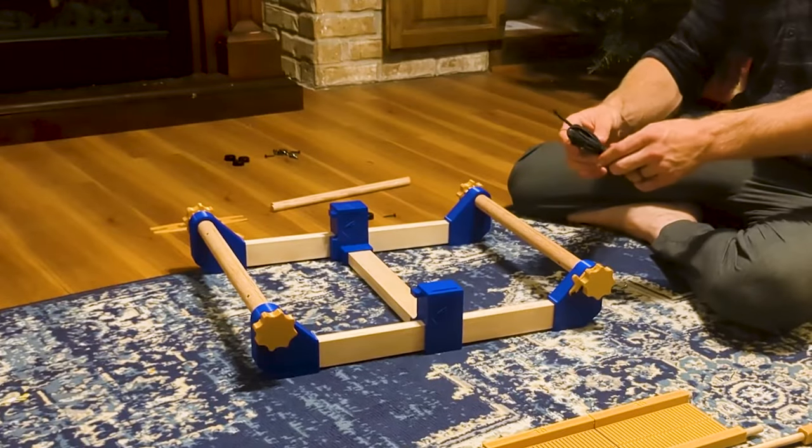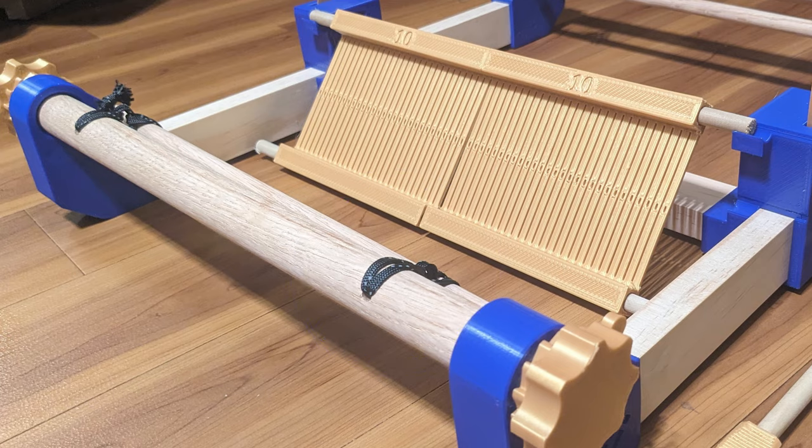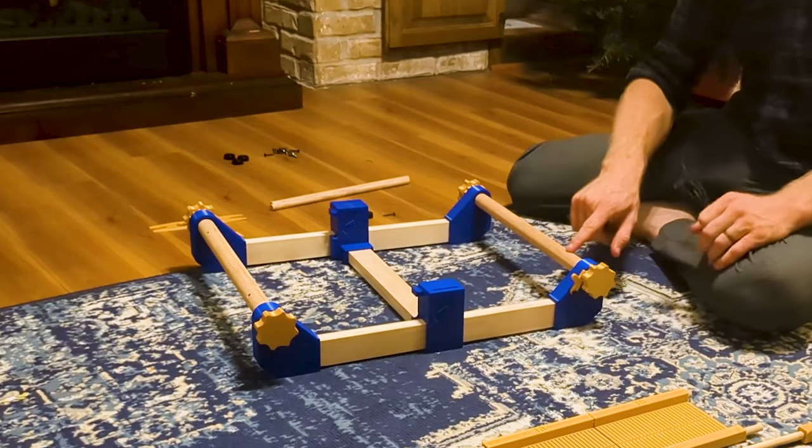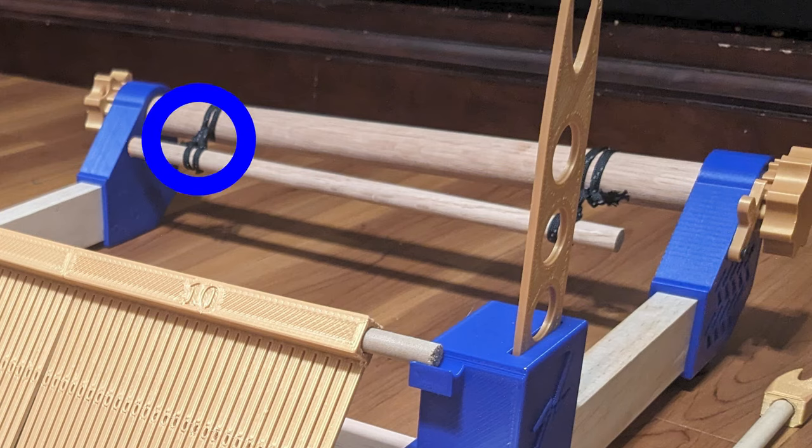Using the paracord that's provided, make two loops that are the same size. These are going to go through the holes in the beam here and will be used to attach the tie-on sticks, like so.